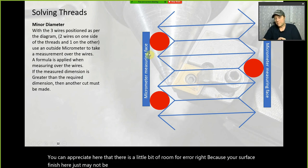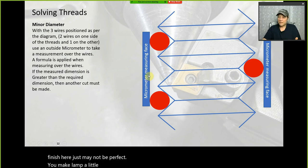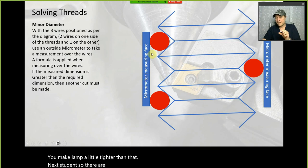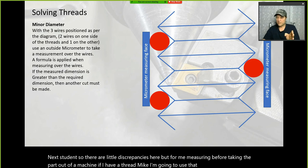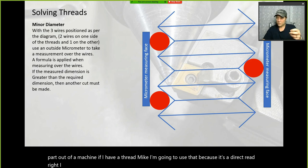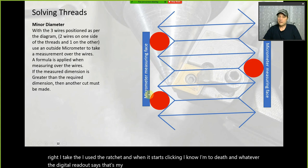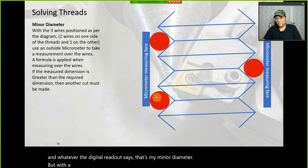There is a little bit of room for error — your surface finish may not be perfect, and you may clamp a little tighter than another student. But for measuring before taking the part out, if you have a thread mic, use that — it's a direct read: when the ratchet starts clicking, you know you're to depth.